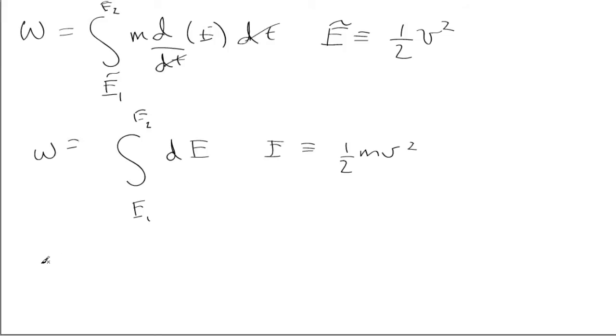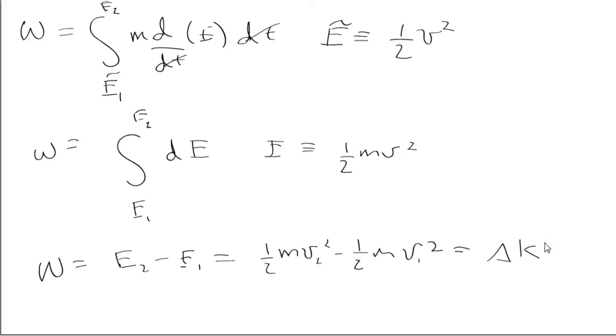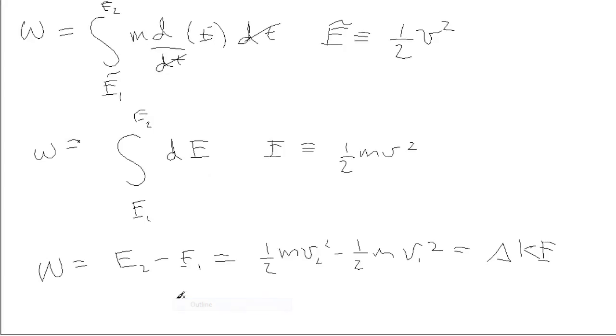And so w is equal to, by the fundamental theorem of calculus, e2 minus e1, which is the same as one-half mv2 squared minus one-half mv1 squared. And hence, this is the change in the kinetic energy of a particle, and thus work energy theorem holds.